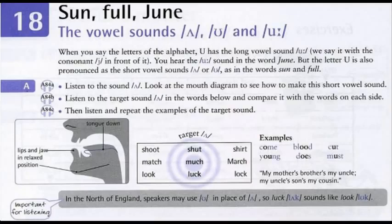A84 C. Come. Blood. Cut. Young. Does. Must. My mother's brother's my uncle. My uncle's son's my cousin.